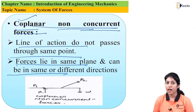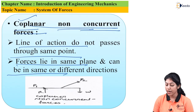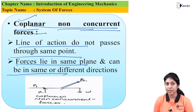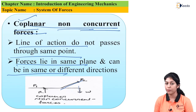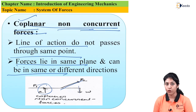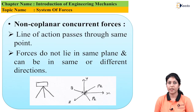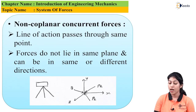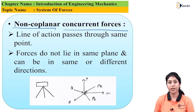For example, if we have a base with a ladder resting against a wall, a person standing somewhere on that base, and some other force applied by an external agent on another point — this is the example of coplanar non-concurrent forces. Now let's discuss the next type: non-coplanar concurrent forces.